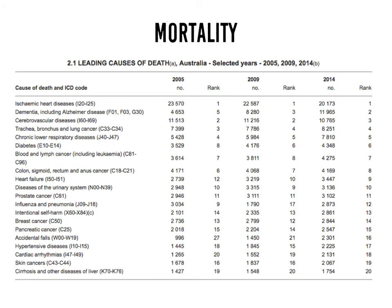This table shows the leading causes of death in Australia. Ischemic heart disease — another way of saying coronary heart disease — is the number one cause of death. These are diseases affecting the coronary artery in the heart, where plaque can build up due to dietary habits, smoking, or stress, blocking blood flow to the heart muscle, leading to chest pains or heart attack.